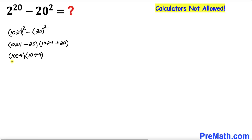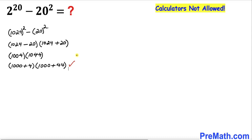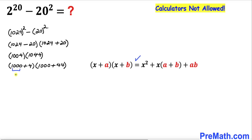Let's go ahead and manipulate these. 1004 could be written as 1000 plus 4, and 1044 could be written as 1000 plus 44, as you can see in the next step. Now let's recall this formula — we're going to treat 1000 as x, 4 as a, and 44 as b. We can write this as 1000 whole square plus...